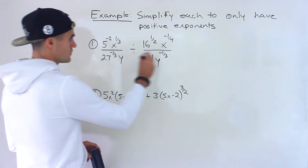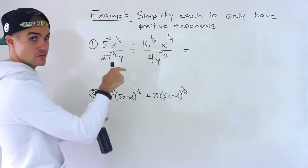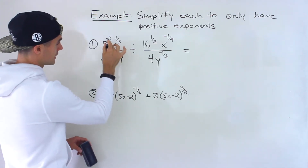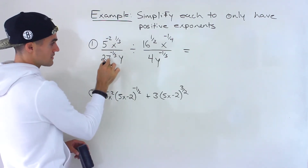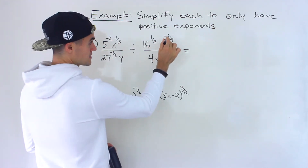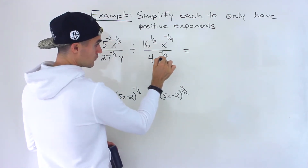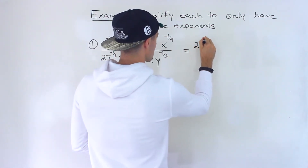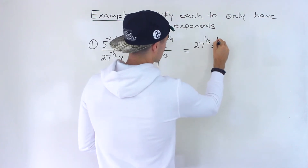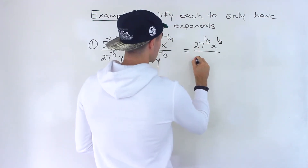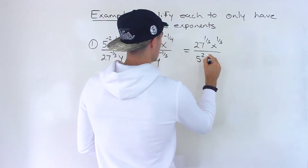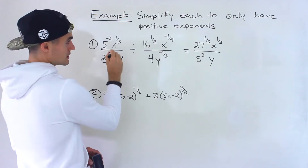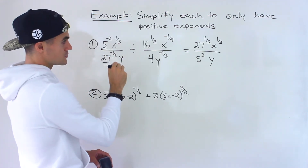With number one, notice we have a couple of negative exponents, so what I'm going to do is change them all to positive. This 5 to the negative 2, for example, I'll bring down. This 27 to the negative 1 over 3 I'll bring up. This I'll bring down. This y to the negative 1 over 3 I'll bring up. After we do all that, we end up with 27 to the power of 1 over 3 times x to the power of 1 over 3, all over 5 to the power of 2 times y. So really we just switch these two around; the other two stayed the same.